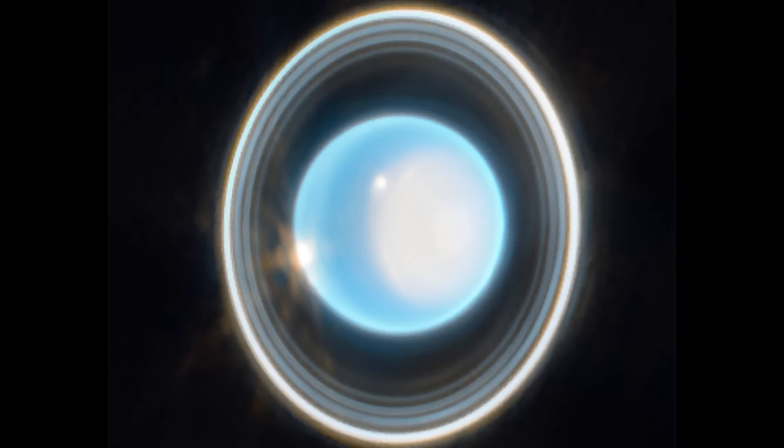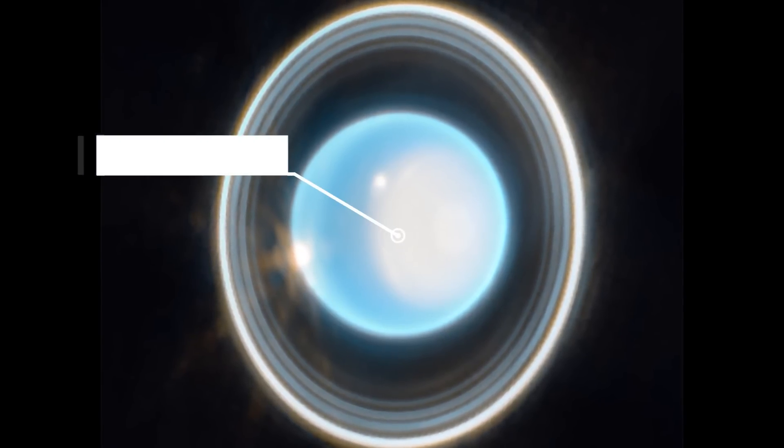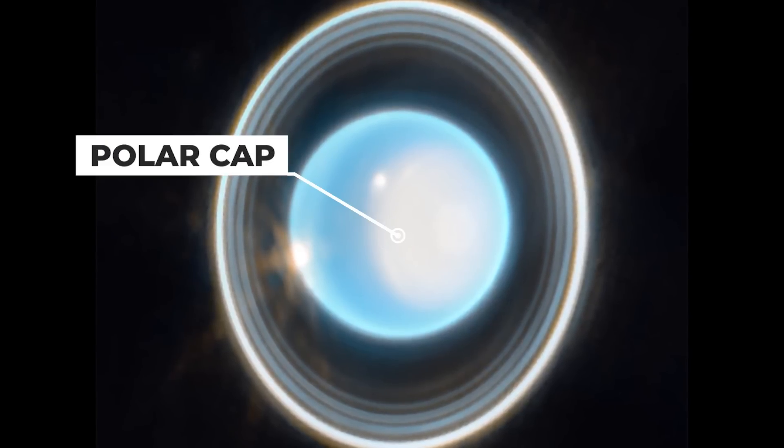On the right side of the planet, there's an area of brightening at the pole facing the Sun, known as a polar cap.